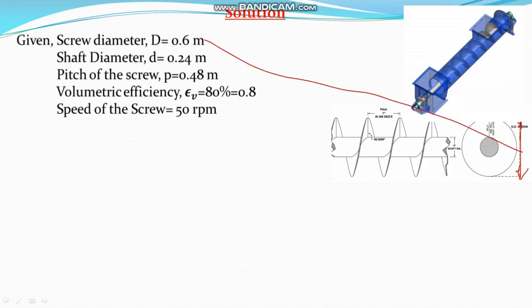Shaft diameter of this one, this is the shaft diameter, shaft diameter of the screw is given as 0.24 meter. Pitch of the screw from one crest to crest, you see the pitch of the screw given 0.48 meter.